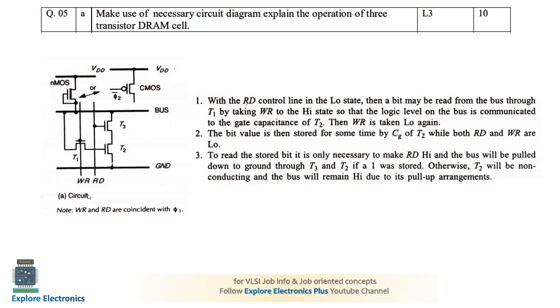After writing, WR is also made 0 and RD is equal to 0. In that case there is no direct connection established for T2 in any manner, so T2 will hold the charge. Now let us understand the read operation.